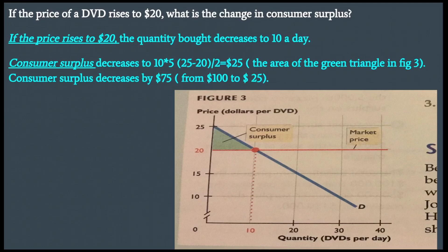If the price of the DVD rises to $20, what is the change in consumer surplus? If the price rises to $20, the quantity bought decreases to 10 a day. The consumer surplus decreases to $25: the base is 10 times the height of $5 (that is, $25 minus $20), divided by 2, giving $25 — the green triangle in the figure. So the consumer surplus decreases by $75, from $100 to $25.